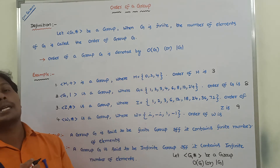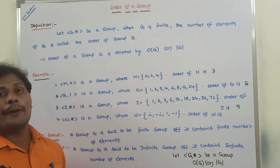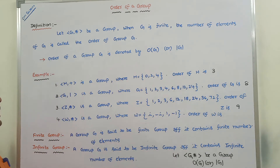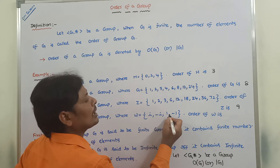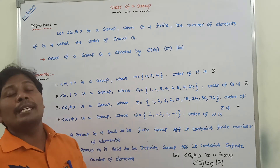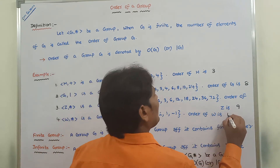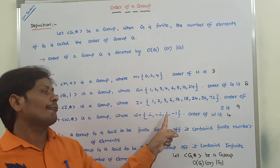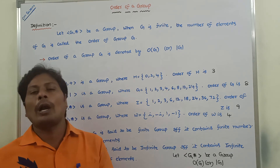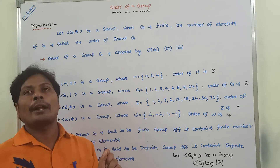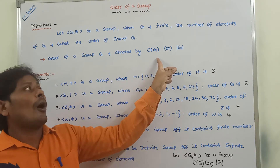Next, (W, *) is a group where W is equal to the set {i, -i, 1, -1}. The number of elements of W is nothing but the order of W. Therefore, the order of W is 4 because W contains 4 elements: i, -i, 1, -1. These are the examples of order of a group. Simply, the order of a group is the number of elements of group G, denoted by O(G) or |G|.